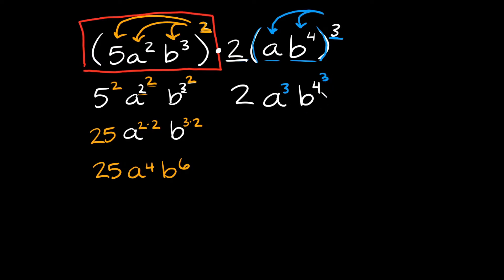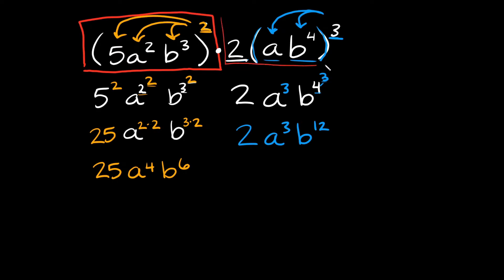How do you simplify a power raised to a power? You just multiply the exponents together. So 4 times 3 equals 12, meaning we're going to have b raised to the twelfth power. Rewriting this, we have 2 a cubed b to the twelfth power. So this whole right side simplified to 2 a cubed b to the 12th.